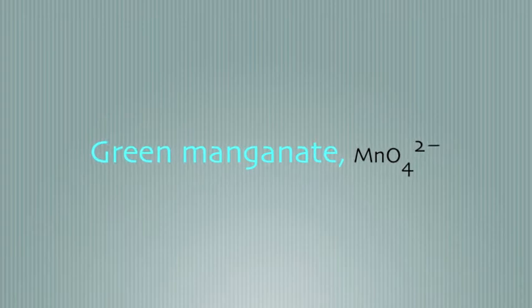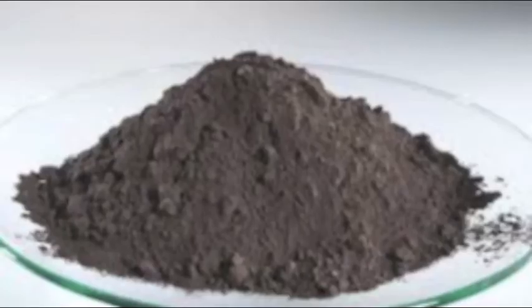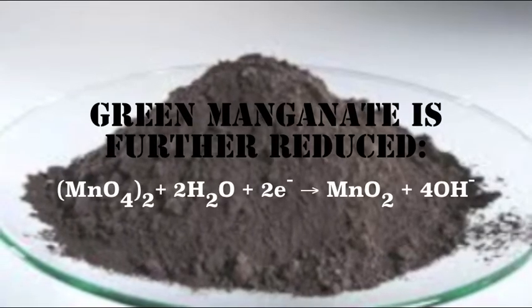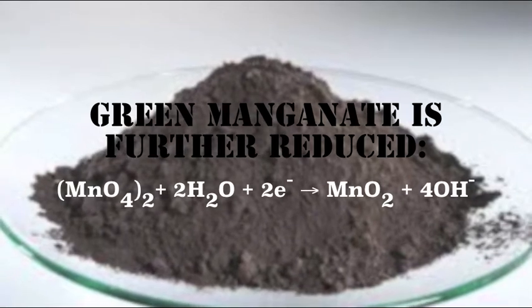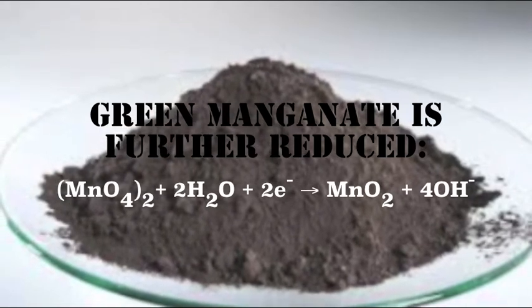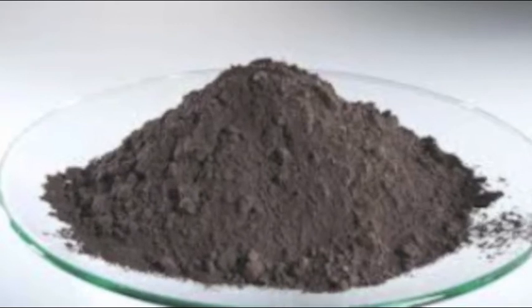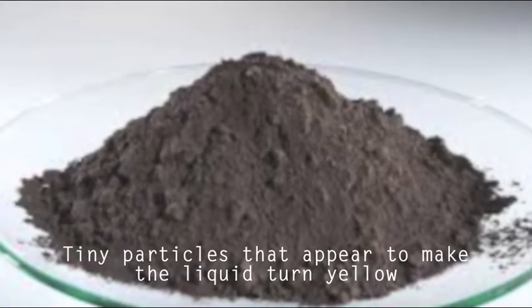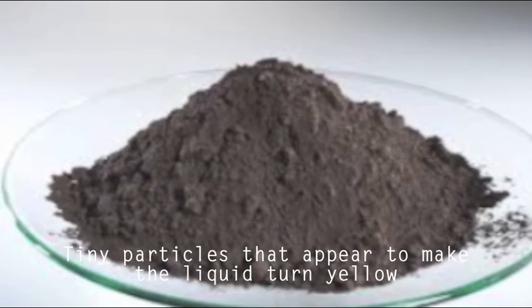Next, the green manganate MnO4²⁻ is reduced again to form manganese dioxide. The equation is as follows. Manganese dioxide is a brown solid, but it has tiny particles that appear to make the liquid turn yellow.